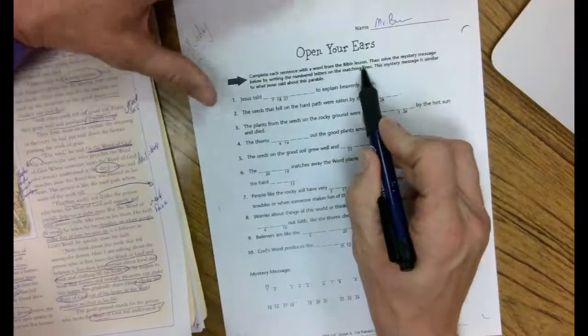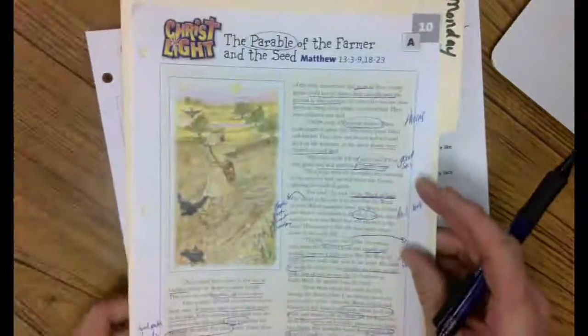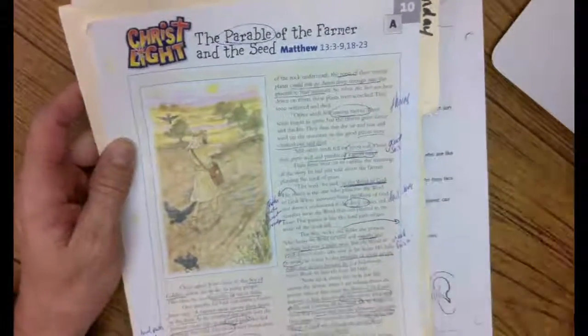Here's the direction. It says complete each sentence with a word from the Bible lesson. So you've got to reread your lesson. In fourth grade, we've been working on rereading things, hopefully third grade as well.